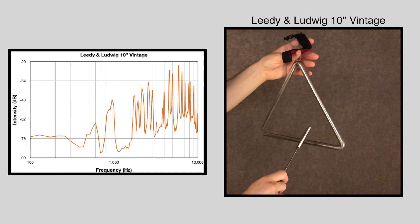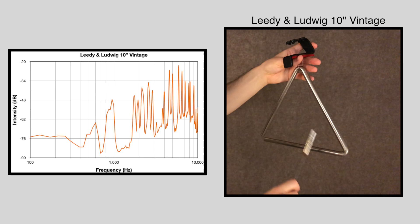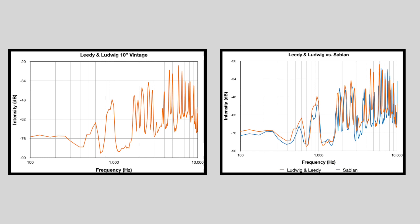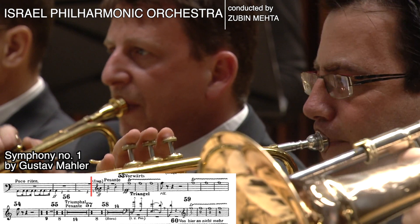This last instrument is a vintage Lede and Ludwig 10-inch triangle from probably the 1940s or 50s. It's on the larger side of professional triangles and covers the sound spectrum pretty evenly. If we compare it to the first instrument, we see that it has a similar frequency profile, but it has louder peaks in the highs and mid and lows. It's perfect for loud moments in a full orchestral texture like the end of Mahler's Symphony No. 1.